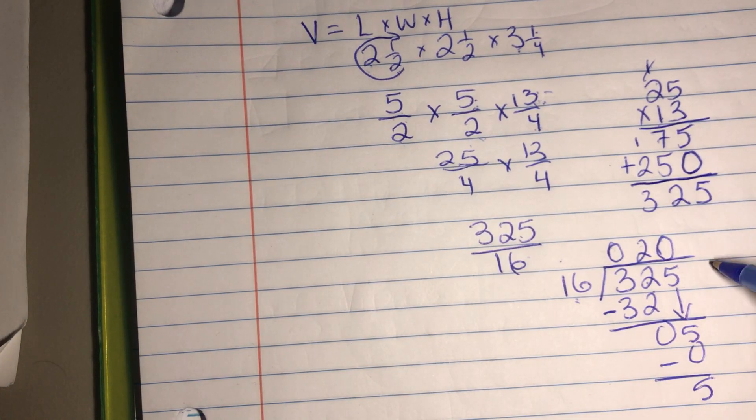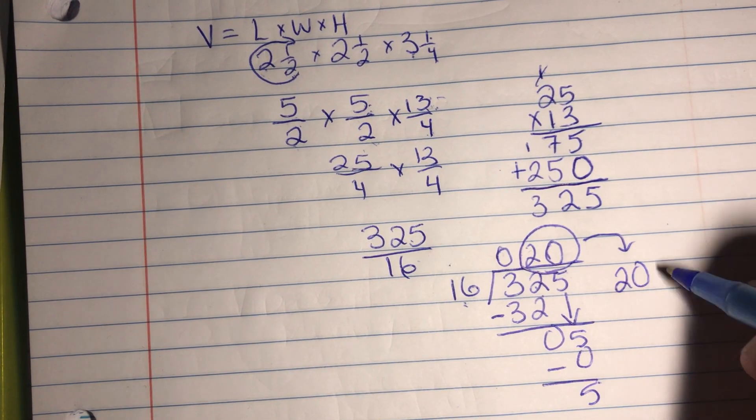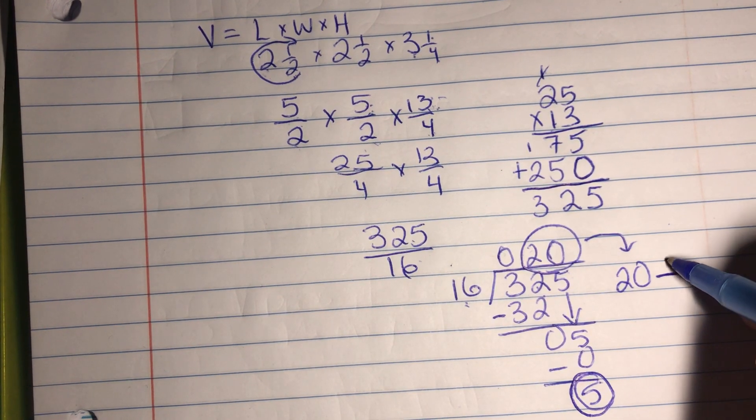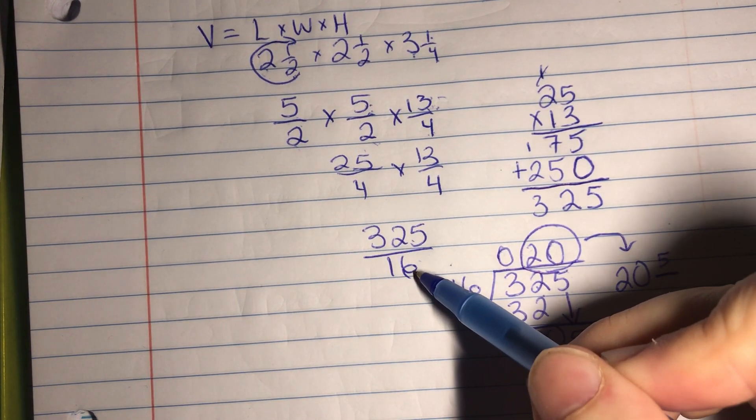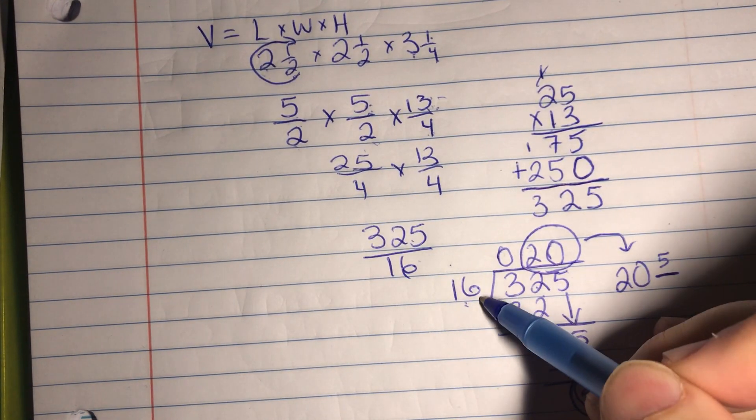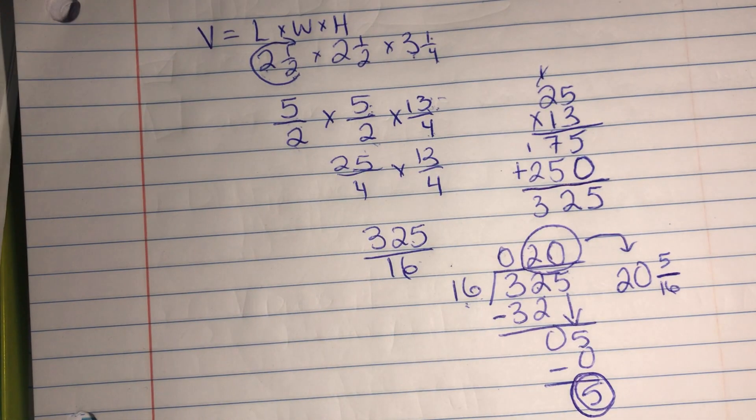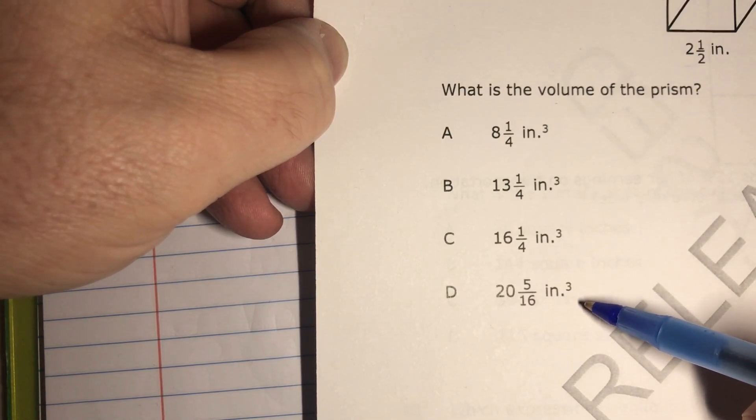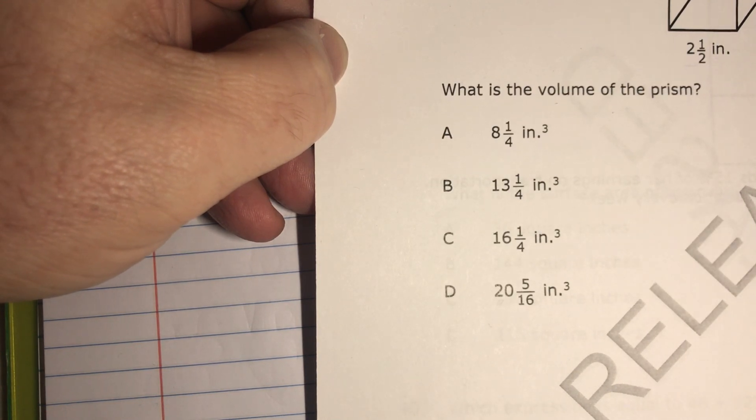How do we write our answer? Well, the number on the top will be our whole number. Let me move the paper over so you can see this. This will be the whole number. Remember, this right here is the remainder. We always put the remainder as the numerator. What do we put on the bottom? The divisor, which is the denominator. Now if you can simplify it, go ahead and check the answers and see if you have twenty and five-sixteenths. See if any of these answers are the same, and there it is. Twenty and five-sixteenths inches cubed. Now, try this on your own and let me know how it goes.